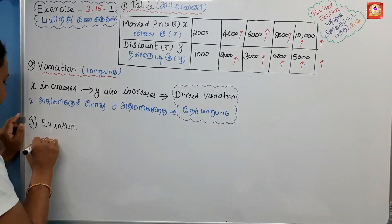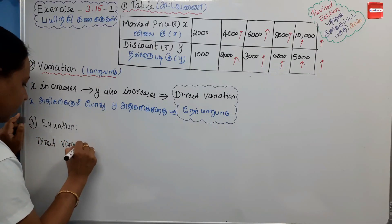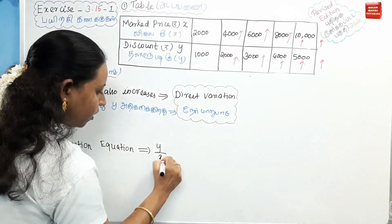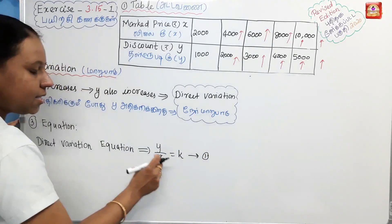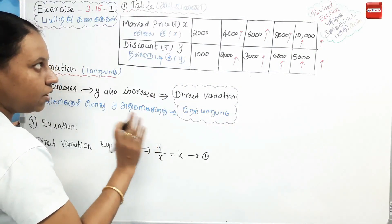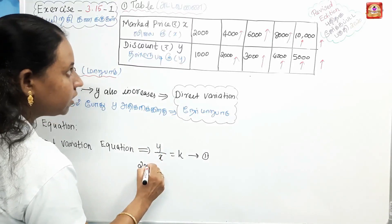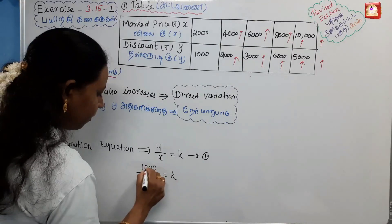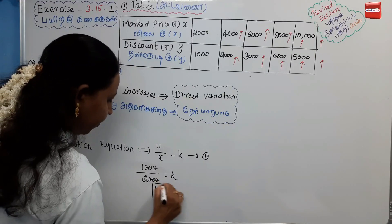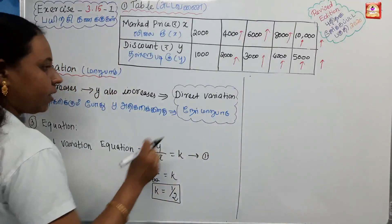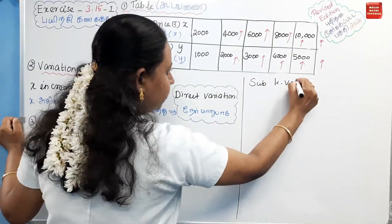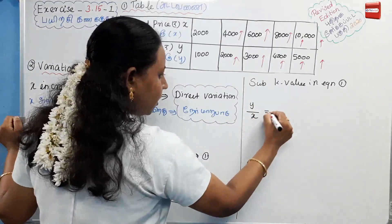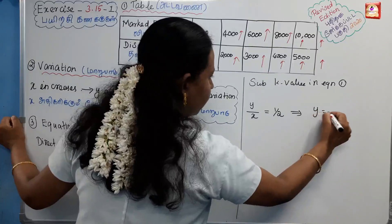The Direct Variation equation is y divided by x equals k. Taking the first value from our table: y = 1,000 and x = 2,000, so k equals 1,000 divided by 2,000, which gives k = 1/2. Substituting k back into the equation: y by x equals 1 by 2, therefore y equals x by 2. This is our equation.